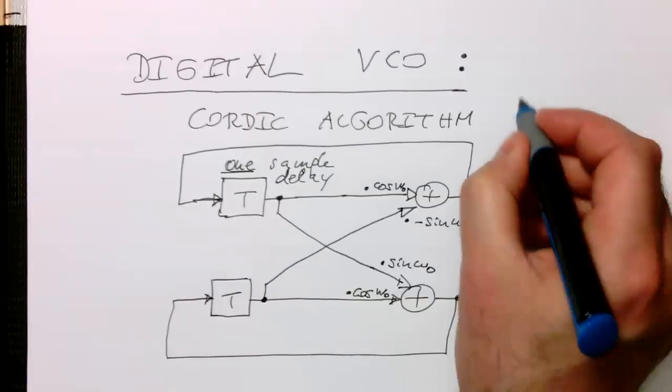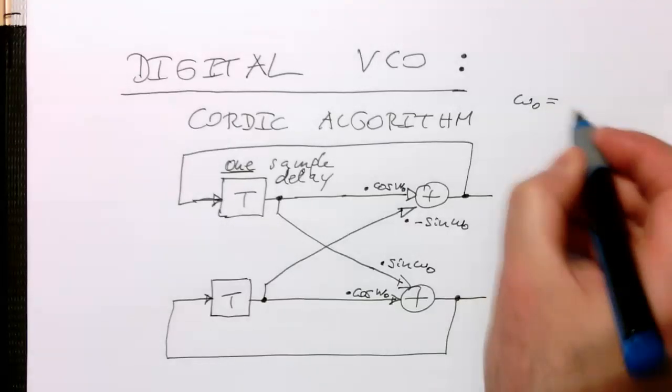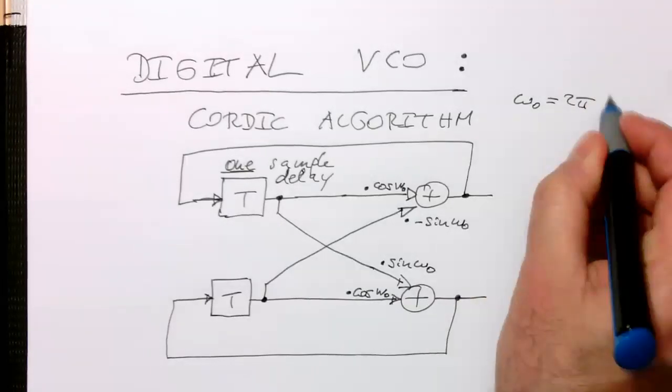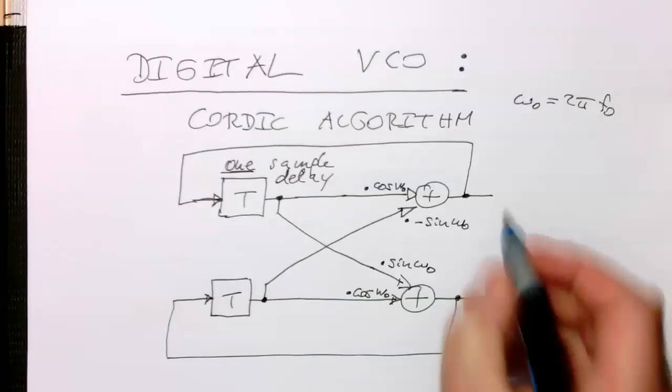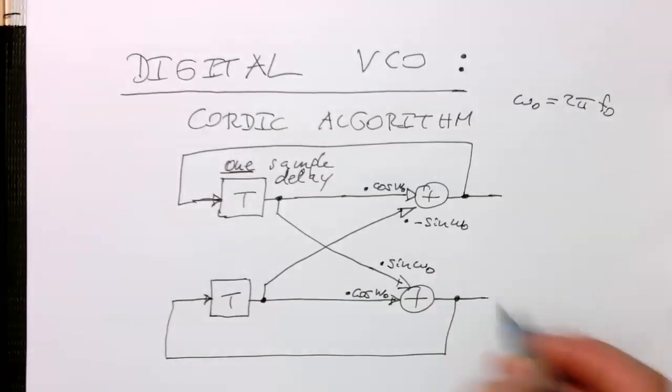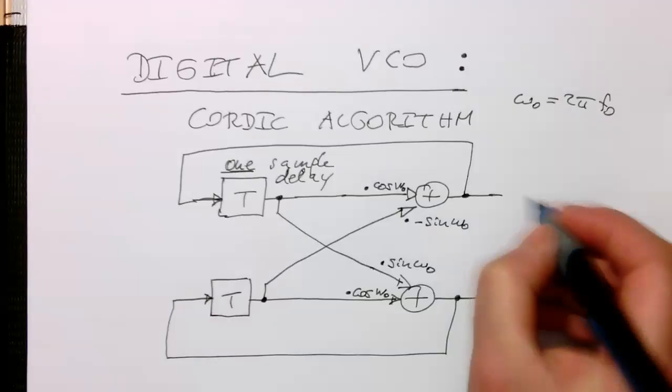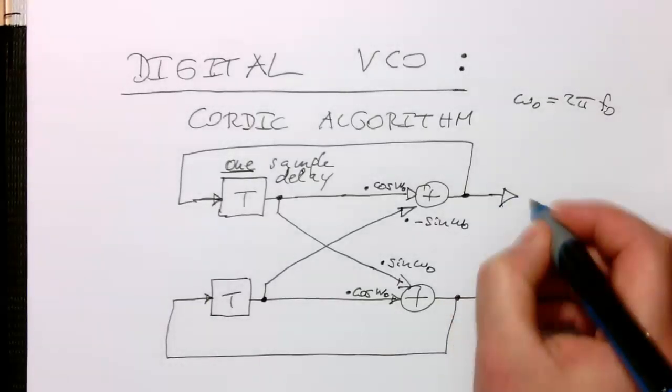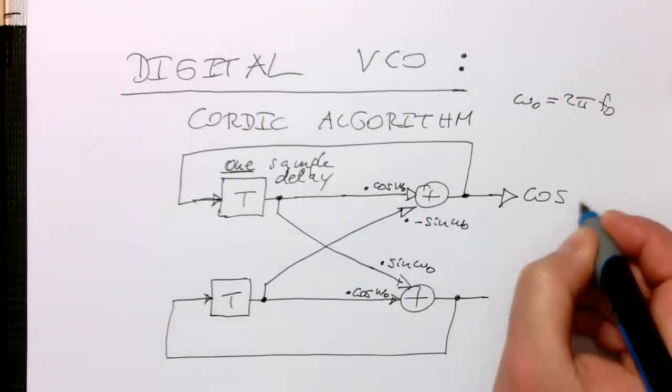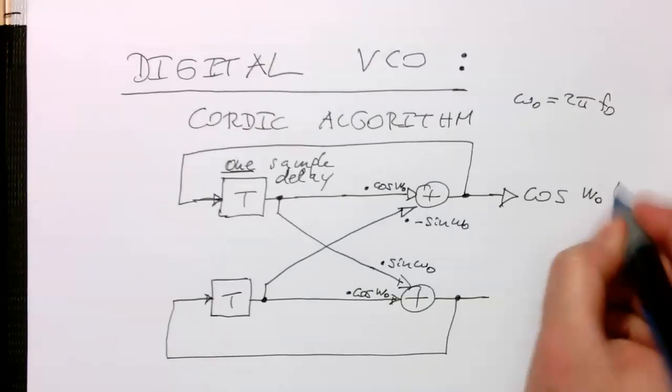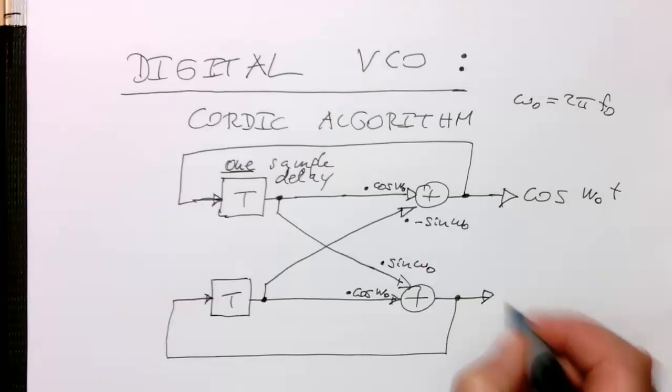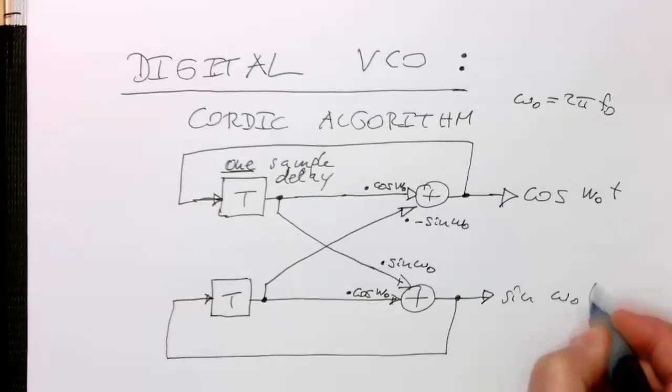With omega zero is obviously two pi f zero. So that's our frequency. And so if we do this, then we're getting an output here called cosine omega zero t. And we're getting an output sine omega zero t.